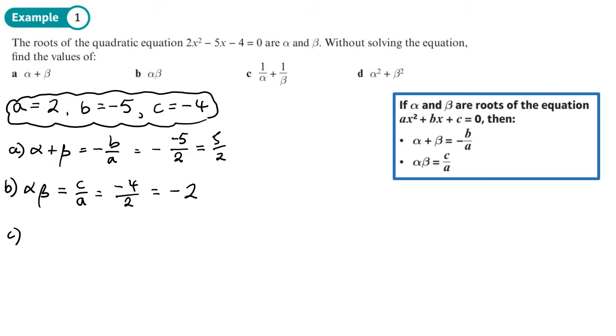For part C, we want to find 1 over alpha plus 1 over beta. We don't have a rule for this, but if I multiply the first fraction top and bottom by beta and the second fraction top and bottom by alpha, I want to add those fractions by giving them the same denominator. So I'd have beta over alpha beta plus alpha over alpha beta.